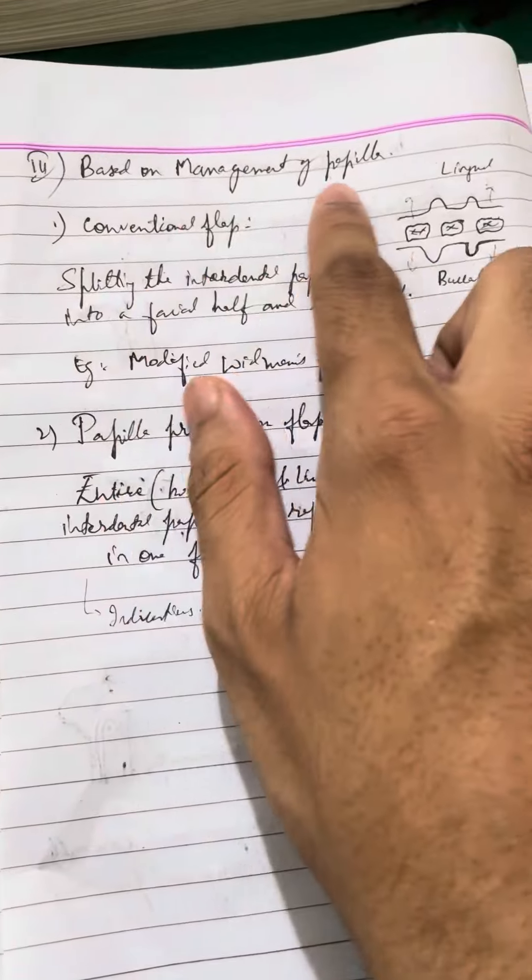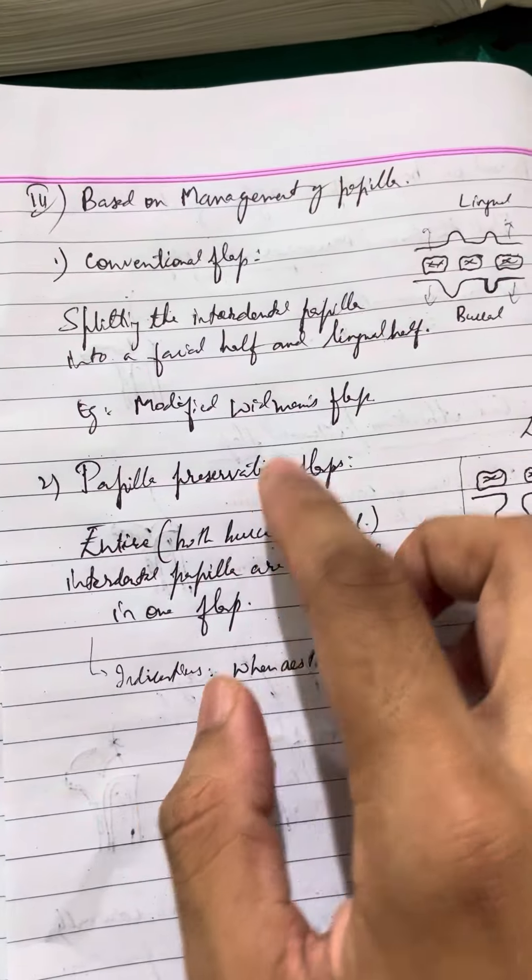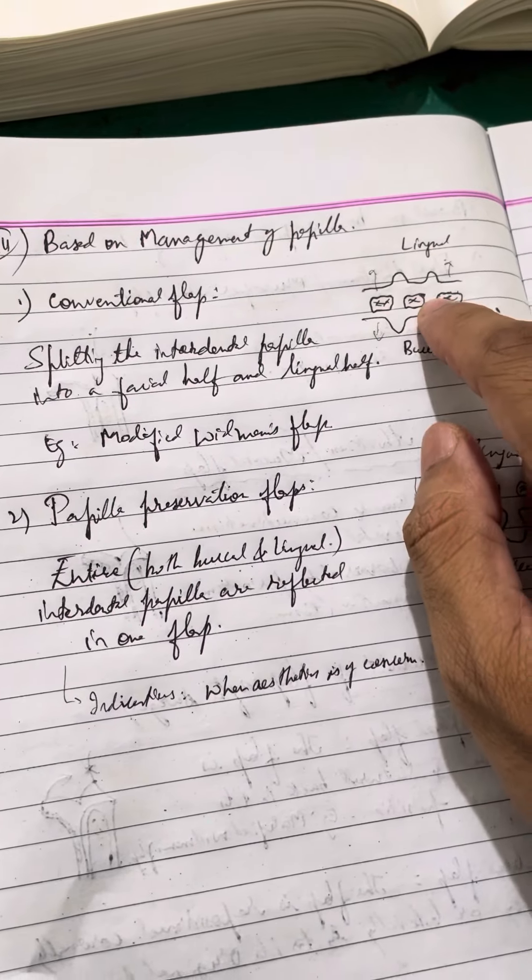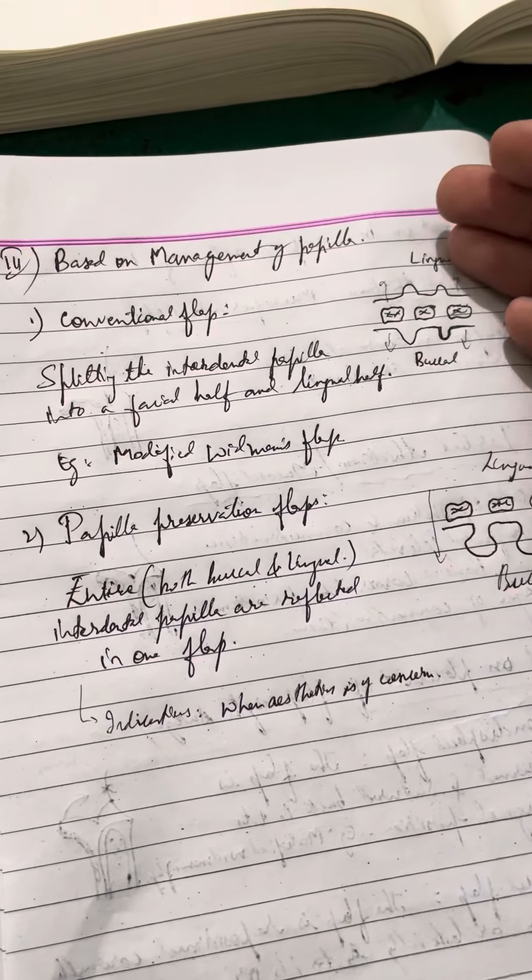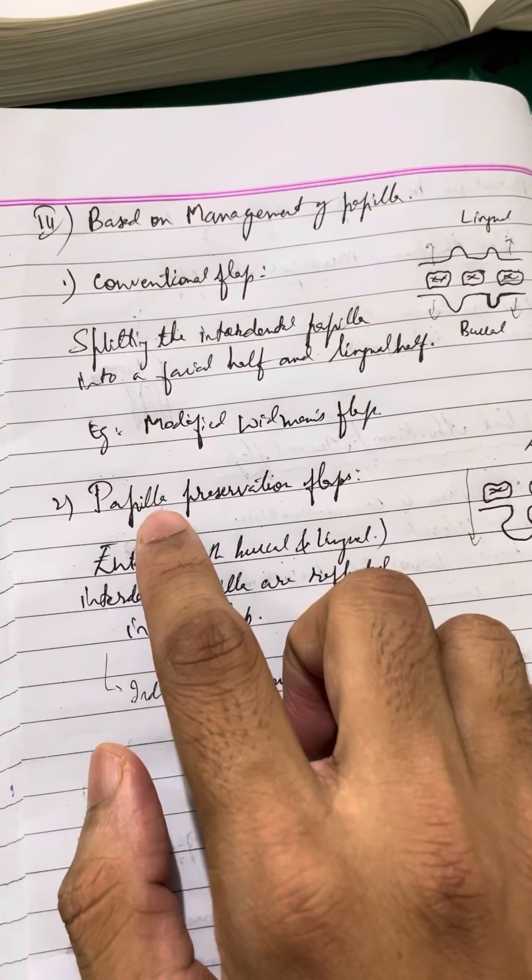Based on management of papilla: Conventional flap - the interdental papillae are reflected into two halves, buccal and lingual. Example: Modified Widman flap.